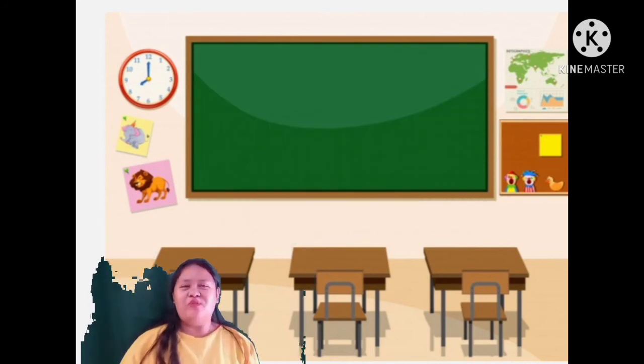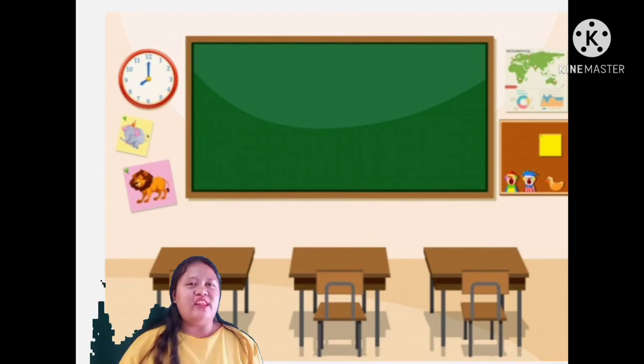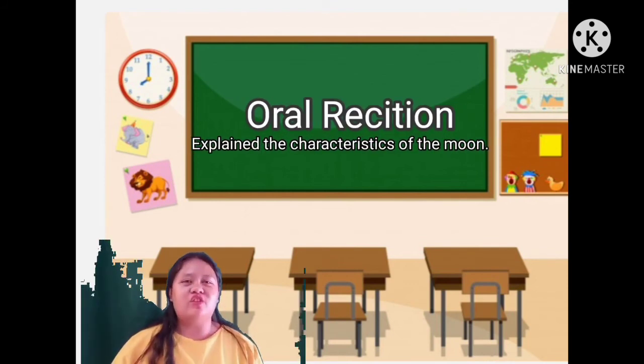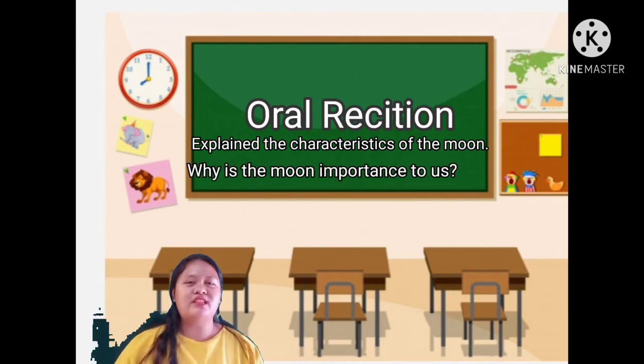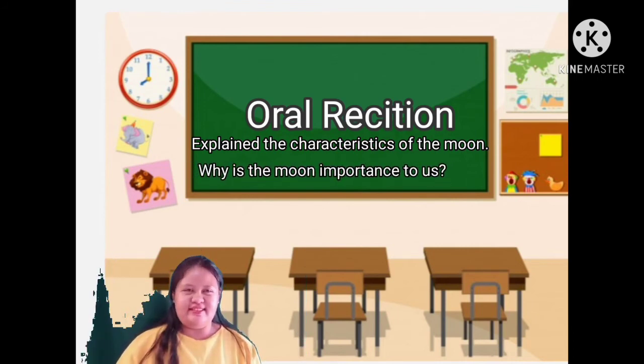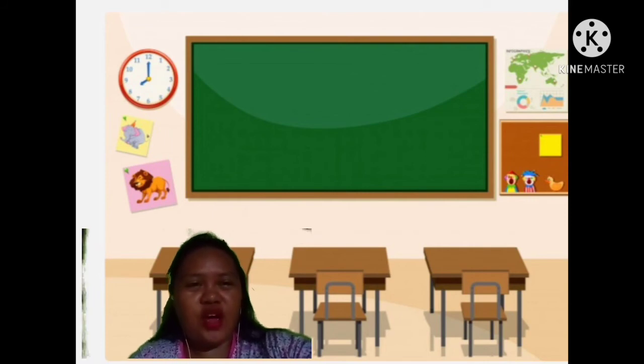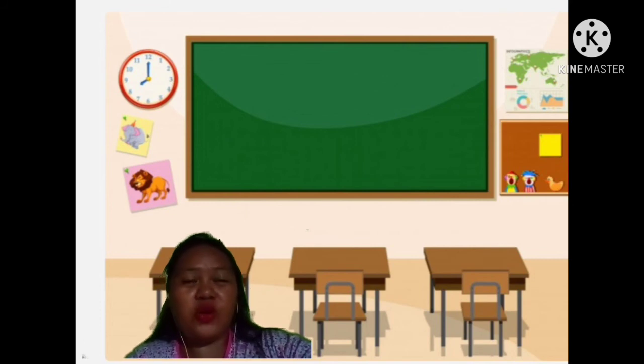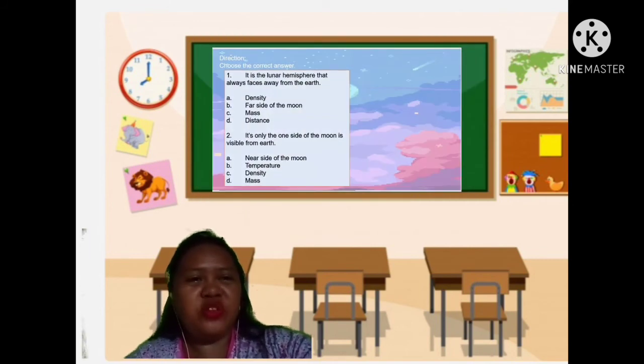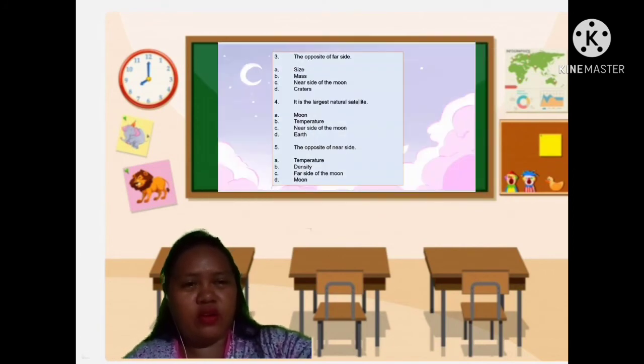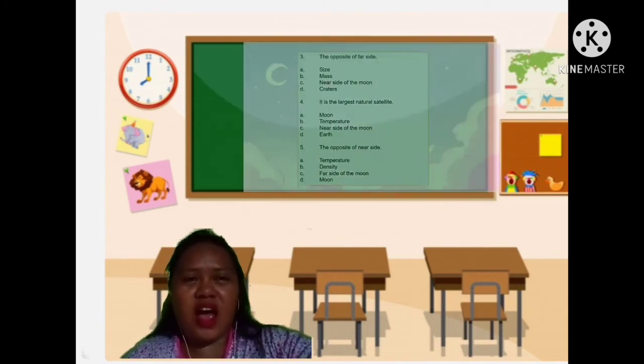Class, I know you have learned a lot from our lesson today. Now, we're going to have an oral recitation. Explain the characteristic of the moon and why is the moon important to us. Class, I'm so amazed of your answer in your oral recitation. And to know more, if you really learned and listened to our lesson for today, I will give you a quiz. I want you to get a one-fourth sheet of paper and enumerate it 1 to 5 and choose your correct answer.